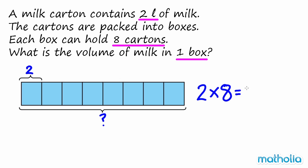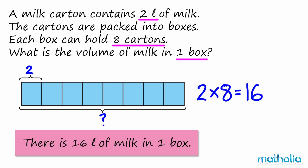Two times eight equals sixteen. So there is sixteen litres of milk in one box.